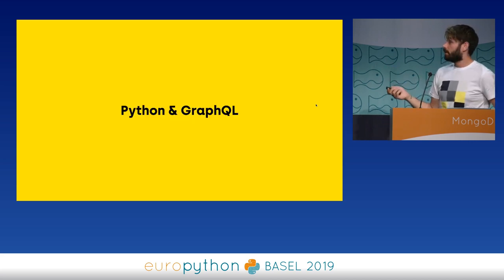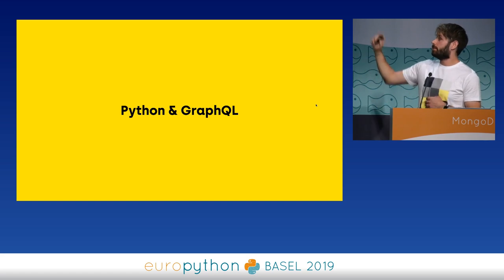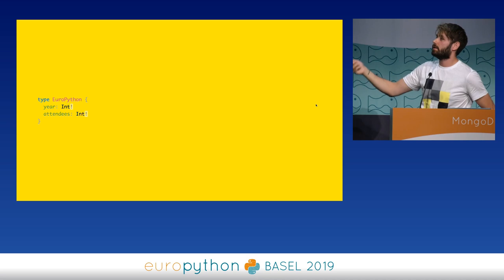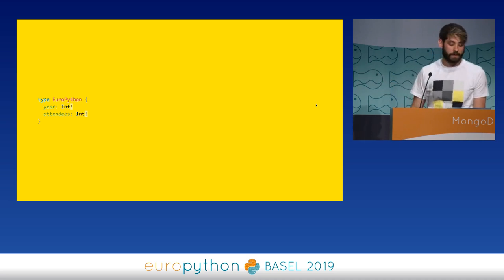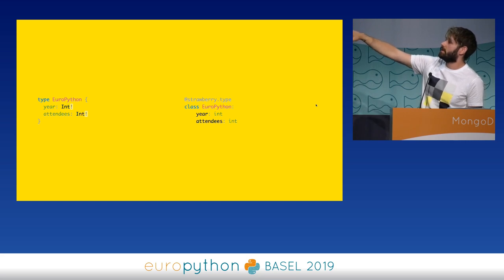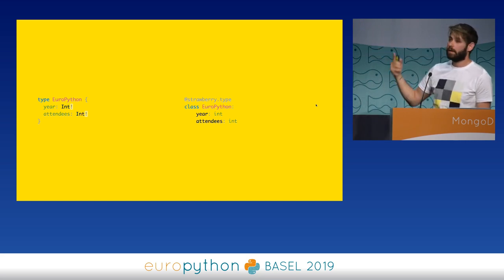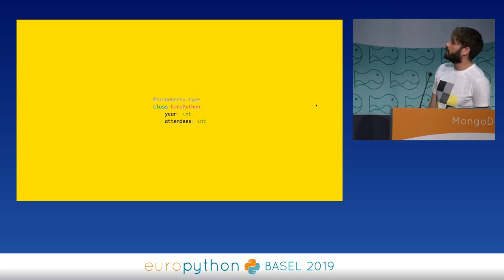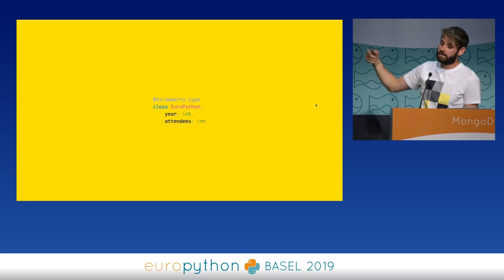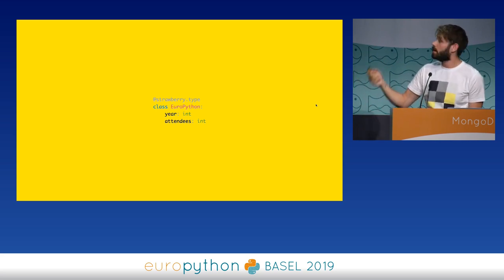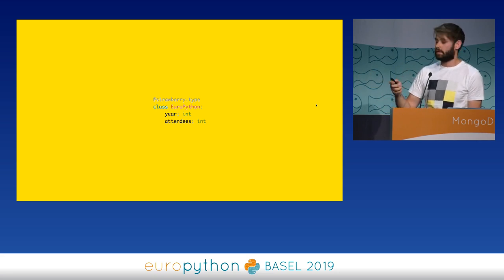Python and GraphQL go well together. The previous data class kind of looks like a GraphQL type — we have the same class called EuroPython with two fields and their types. So I created a library called Strawberry, where you use a decorator called strawberry.type, which does what data classes does — it actually uses data classes under the hood — but it also creates a GraphQL type, so you can use this to create a server based on that.